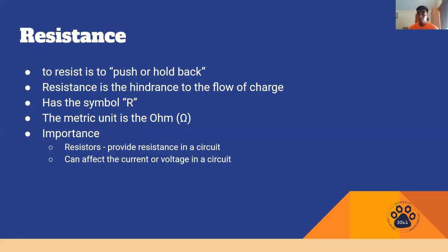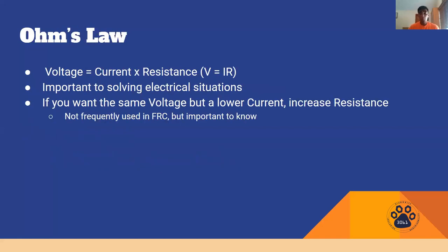The way that all these three terms tie together, which helps better explain resistance in itself, is something called Ohm's law. Ohm's law is commonly known as V equals IR. So as we learned V is voltage, I is current and R is resistance. So this can be rewritten to say voltage equals current times resistance. And this is a very simple straightforward equation that really ties together all the three terms we learned today.